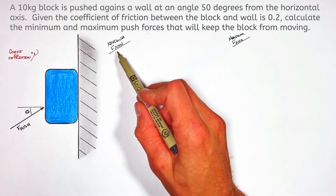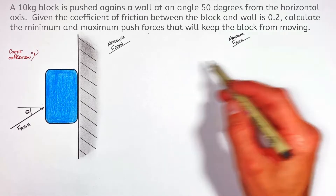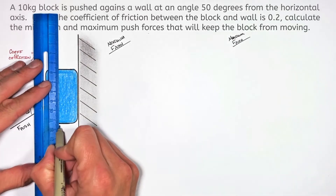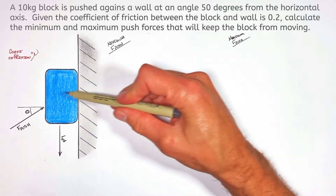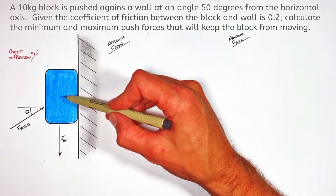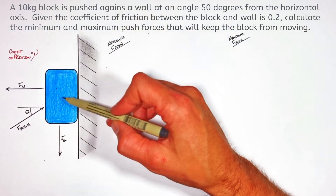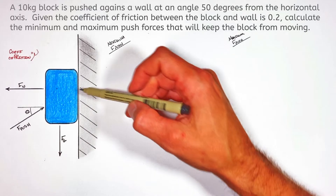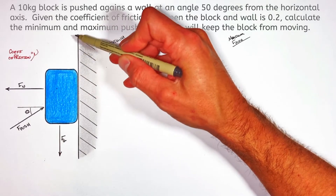The free body diagram is slightly different in the two situations. Starting with the free body diagram for the minimum push force: there's gravity acting downward, and because the push force presses the block against the wall, the wall pushes back with a normal force acting to the left on the block. In this situation, pushing as lightly as possible to keep the block from sliding down, friction acts upward on the block.